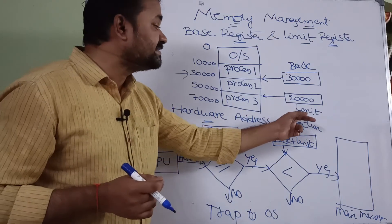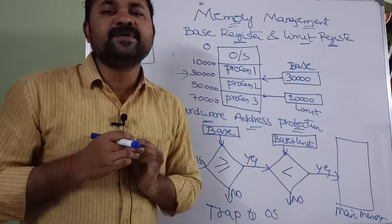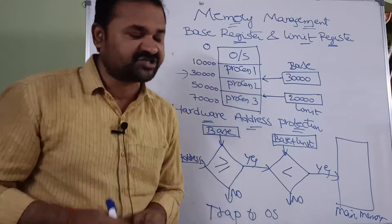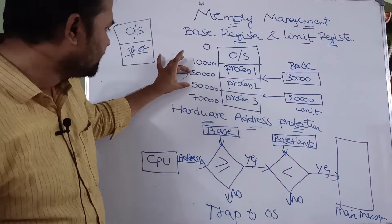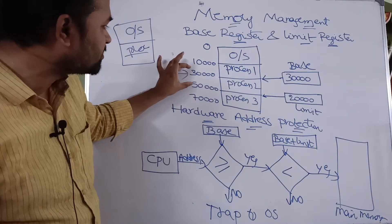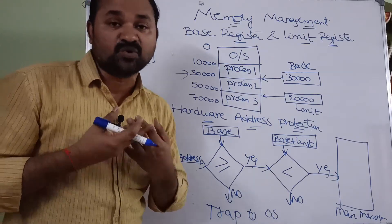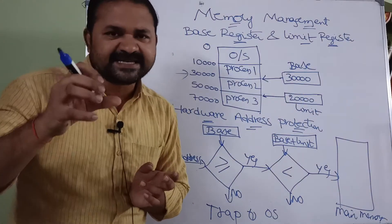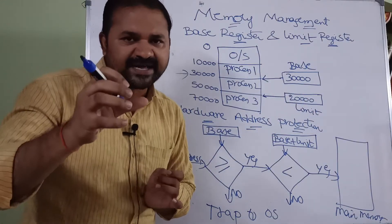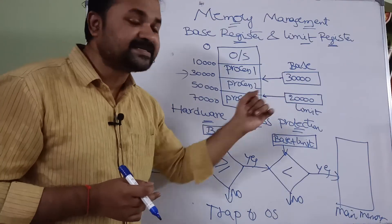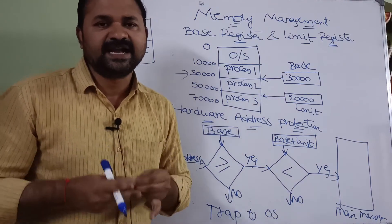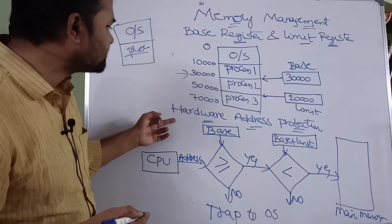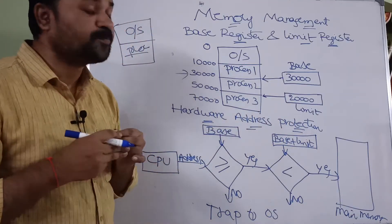The second register is the limit register. The limit register contains the length or size of the process. For the second process, it totally contains 20,000 instructions, so the limit is equal to 20,000. In summary, the base register contains the starting address and the limit register contains the length or size of the process.